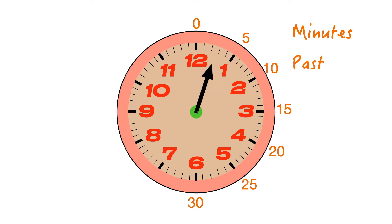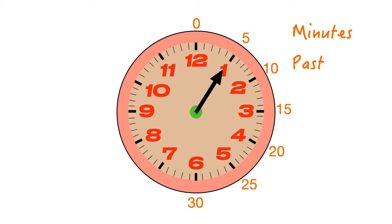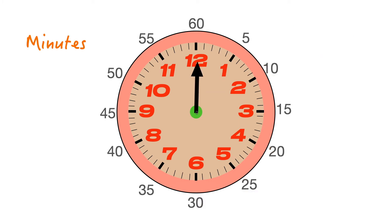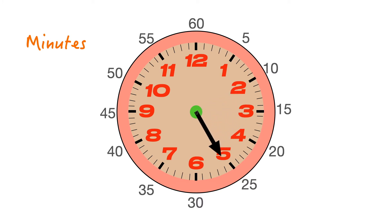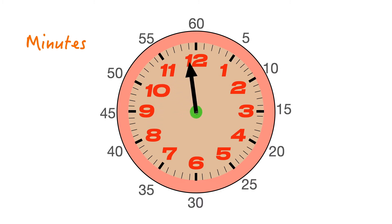When our long hand is pointing to the 1, this actually represents five minutes. Because from our 12 to our 1, we have ticked past one, two, three, four, five minutes. And it's past because we are on our past side of the clock. As we move around our large numbers — the hour numbers — they are actually representing our minutes past. We keep counting in lots of five because between each hour number there are five individual minutes.